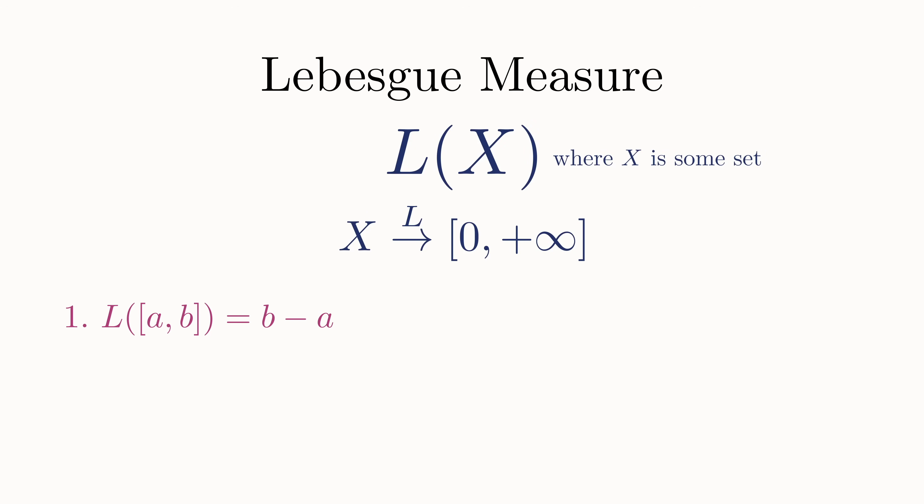First, the length of any interval from a to b is b minus a. So the length of this segment is 4, the length of this segment is 2, and so on. The length of a single point is always 0.